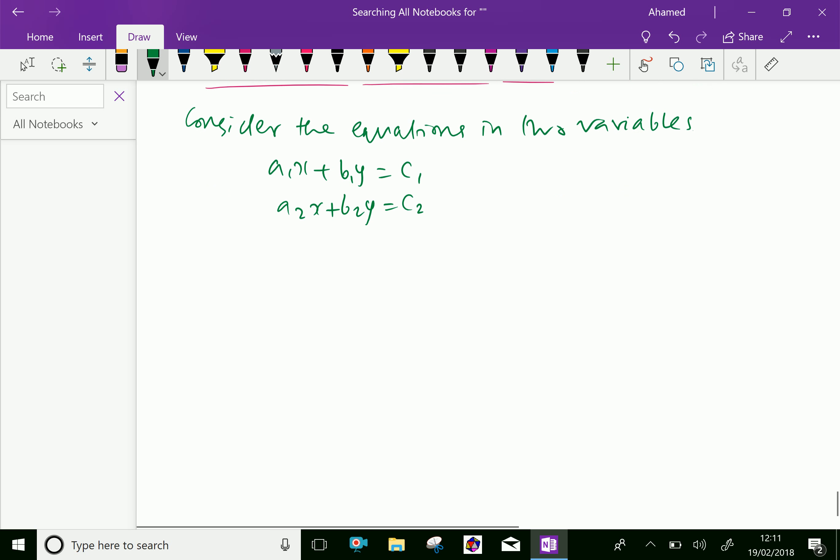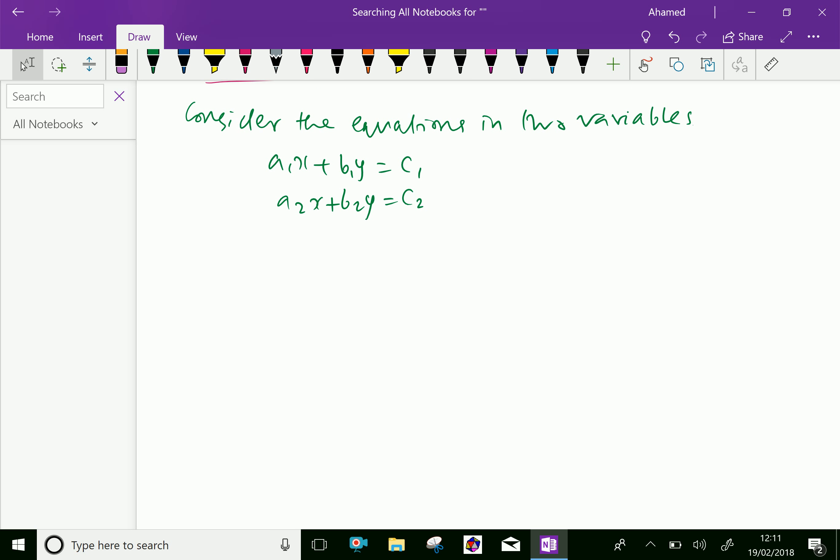We can write this equation in terms of matrix multiplication form like here: a1, b1, a2, b2 into xy equal matrix c1, c2.